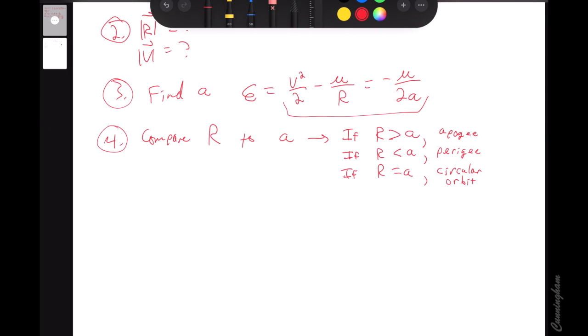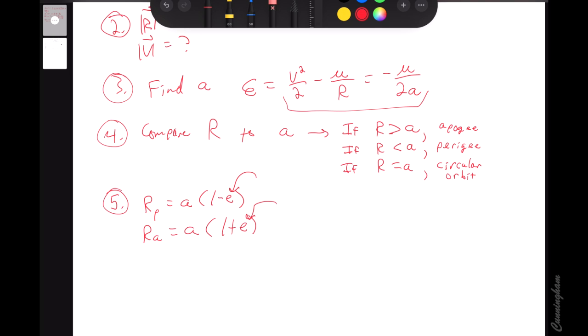Once you know which of apogee or perigee you're at, you'll be able to use these equations—one of the two you make your pick based on if you're at apogee or perigee—to reverse engineer e out of that. And then based on if you're at apogee or perigee, or based on step four and five...